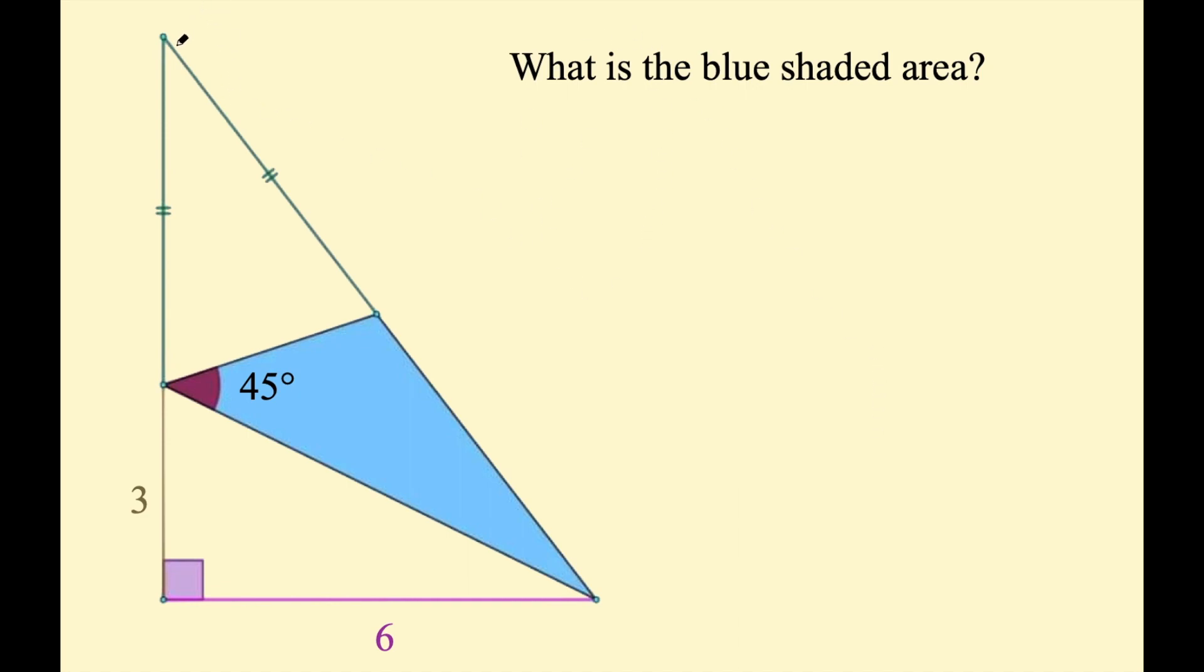This first question gives us a right triangle and then in the corner there's an isosceles triangle. We're looking for this blue shaded region. All they tell us is this angle is 45 degrees, this length is 3, and this length is 6. A reminder to pause the video now if you want to give this problem a go yourself.